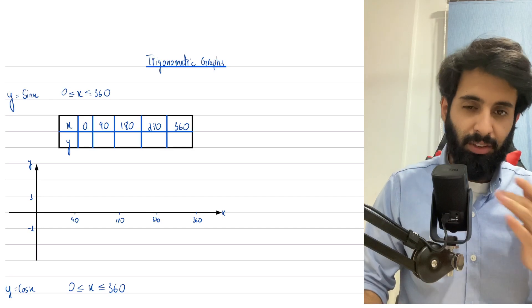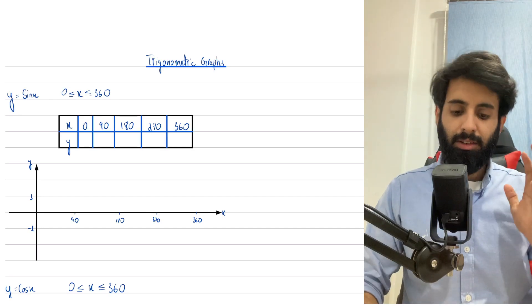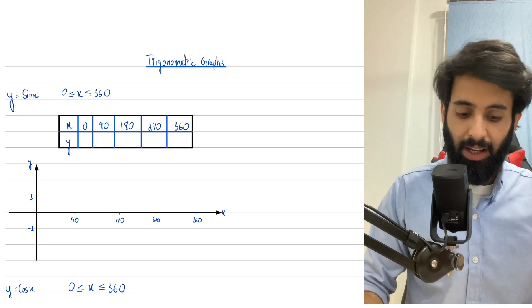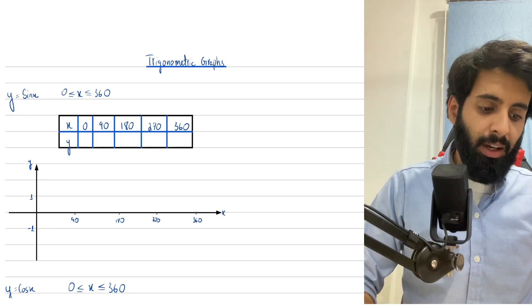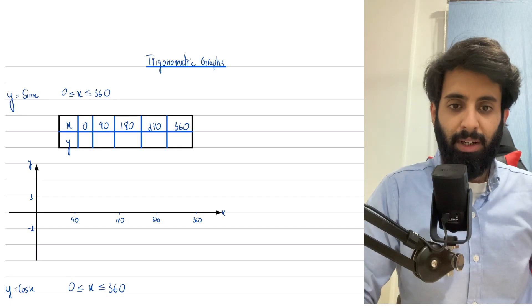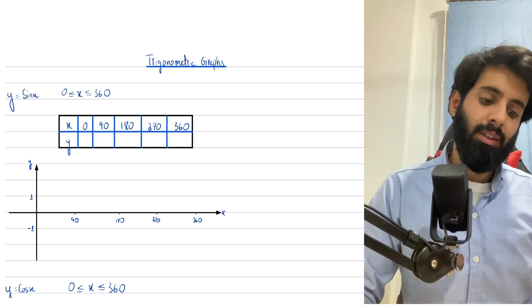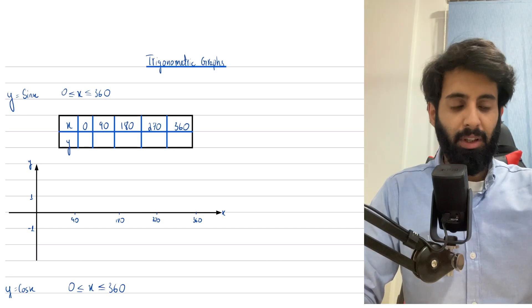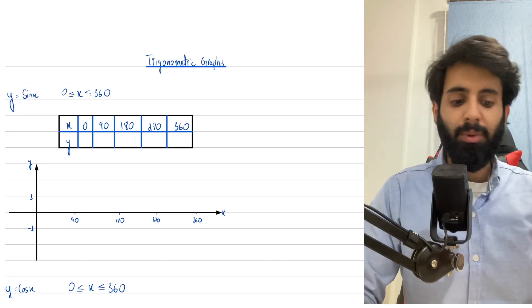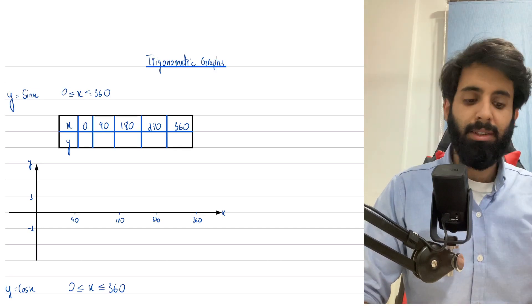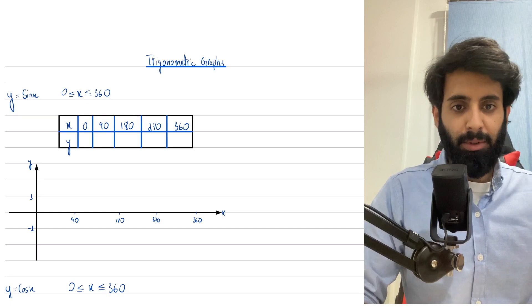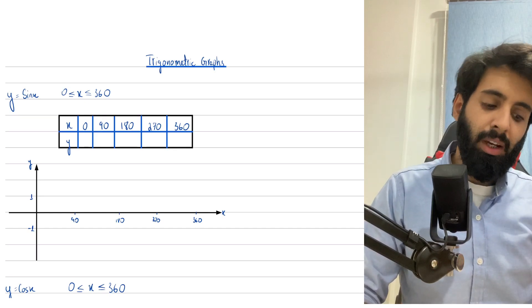By that I mean just sine x, cos x, and tan x. And then we're going to play around with them a little — we're going to add something, we're going to see what the effect of that is, we're going to multiply, we're going to subtract, and we're going to see what the effect of that is.